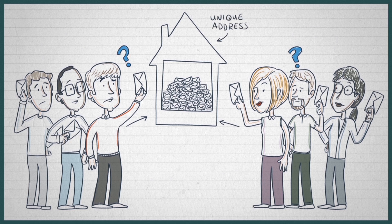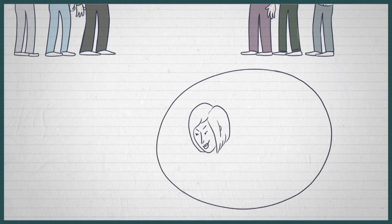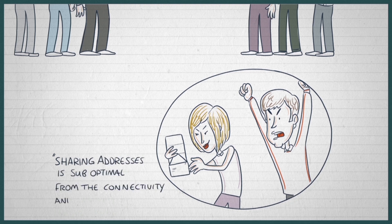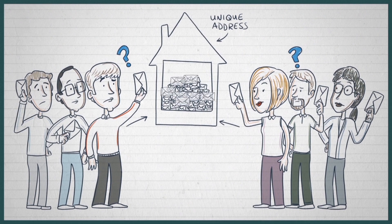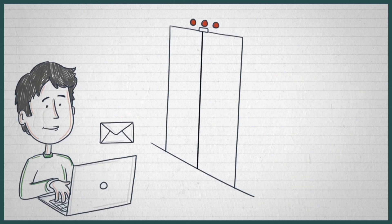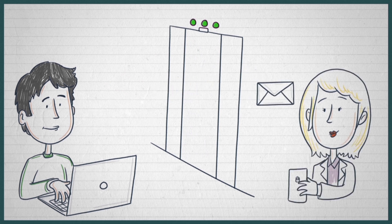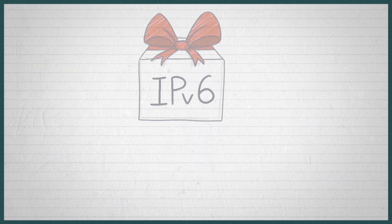As a consequence, unique addresses have to be shared. Sharing addresses is suboptimal from the connectivity and security perspectives — it's like sharing a post office box address that collects letters before they are distributed to the final addressee. Relatively complex authentication and relaying methods have to be used to ensure the integrity of communication between end devices and users.